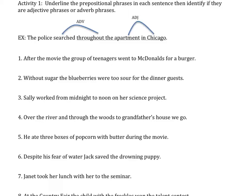So an example here: throughout the apartment in Chicago. So 'throughout the apartment' is modifying 'searched,' and then 'the apartment where in Chicago' is an adjective. So let's go through this and see how well you did.